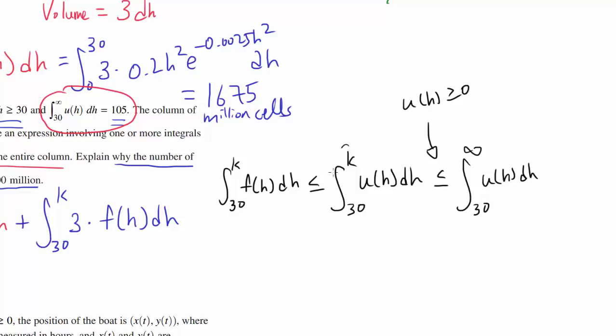So we should increase or stay the same, so we can establish this inequality. The first inequality was because F(H) ≤ U(H). Knowing this, we know this integral is less than or equal to 105.